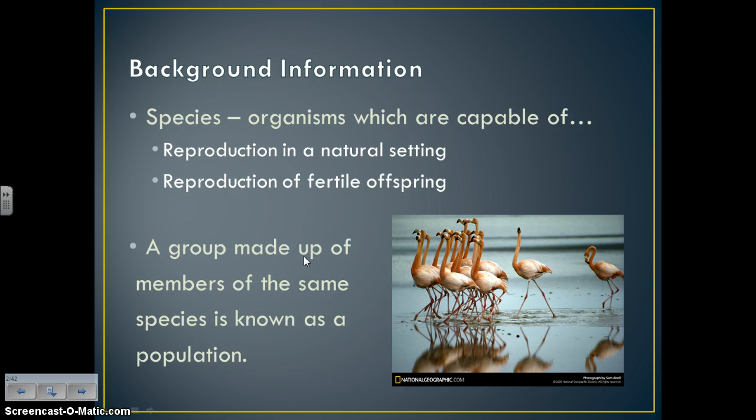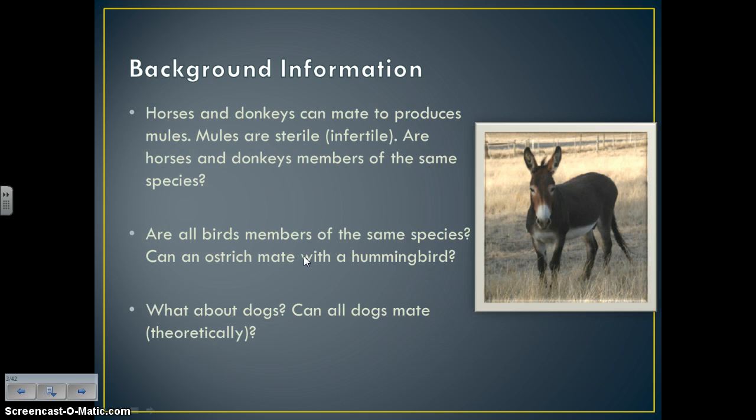A group made up of members of the same species is also known as a population, so you'll hear me use those terms interchangeably. Quick review: horses and donkeys can mate to produce mules. Mules are sterile or infertile, so are horses and donkeys members of the same species?